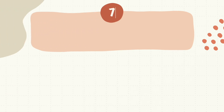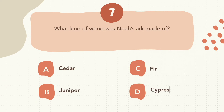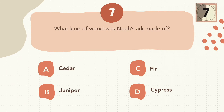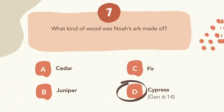Question 7: What kind of wood was Noah's Ark made of? The correct answer is D, Cyprus.